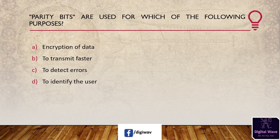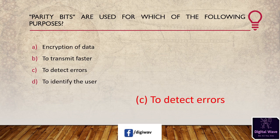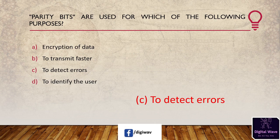Next question: parity bits are used for which of the following purposes? Options are: encryption of data to transmit faster, to detect errors, to identify the user. The answer is to detect errors. The parity bit is also known as the check bit and has a value of 0 or 1. It is used for error detection for blocks of data.